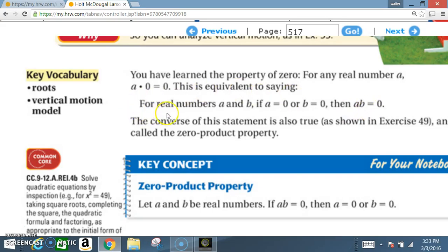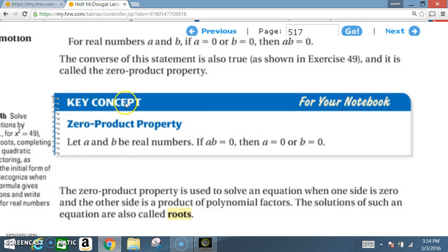For real numbers a and b, if a equals 0 or b equals 0, then a times b equals 0. Key Concept: Zero Product Property.